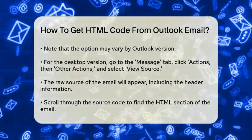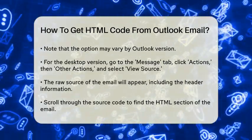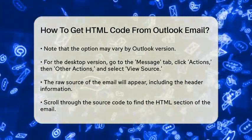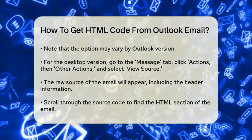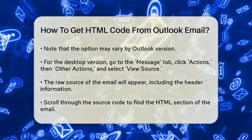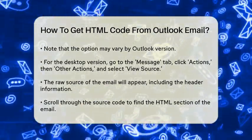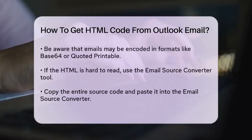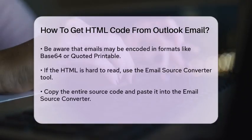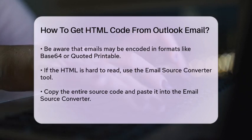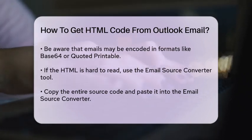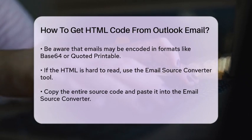When you select View Message Source, you'll see the raw source of the email. This includes the header of the email, which contains information like the sender, subject line, and authentication details. Scroll down through this source code and you'll eventually find the HTML part of the email. However, sometimes the email is encoded in formats like Base64 or Quoted Printable, which can make it hard to read the HTML directly.